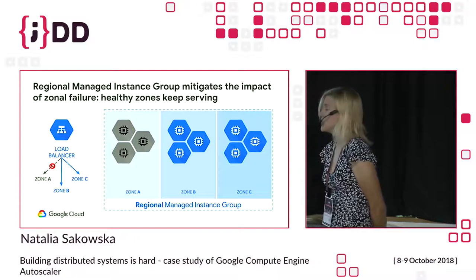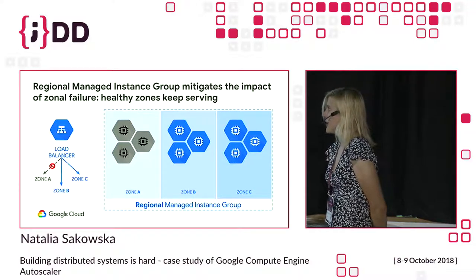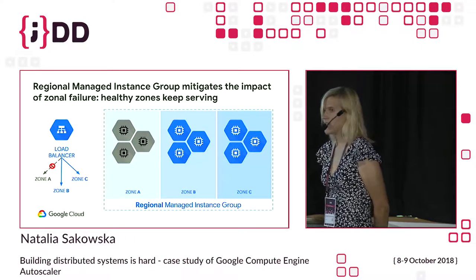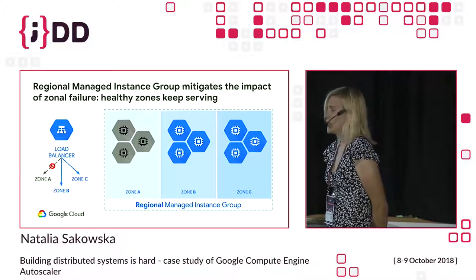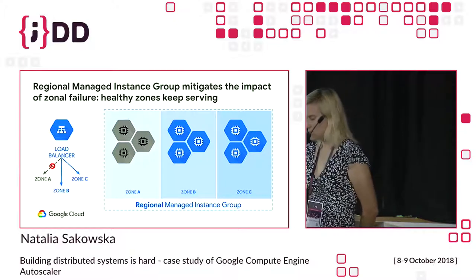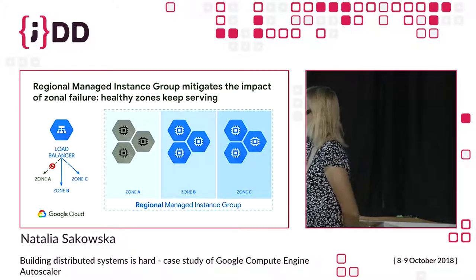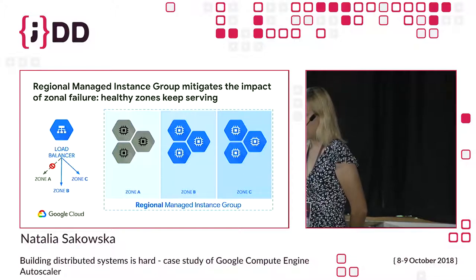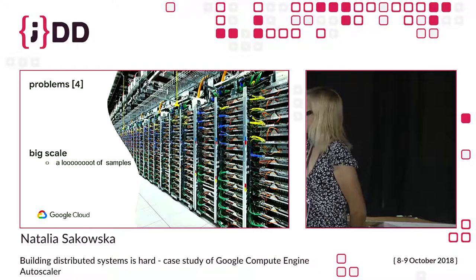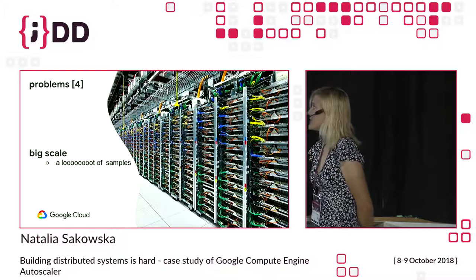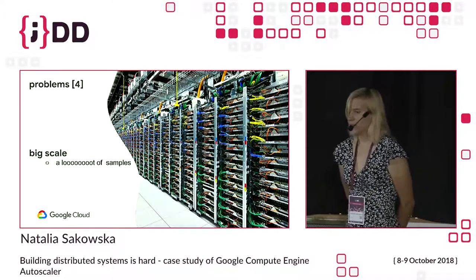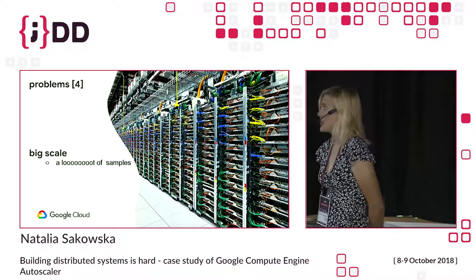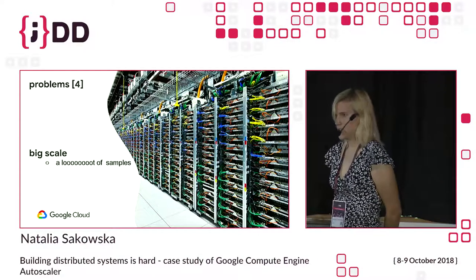In an ideal healthy situation, the number of instances will be balanced across zones. So if you have nine instances in a region with three zones, that would mean three instances in each zone. Now let me come back to other difficulties we have when building distributed systems at Google.